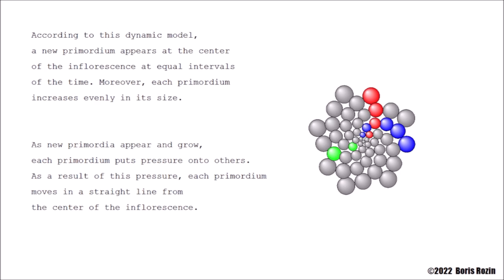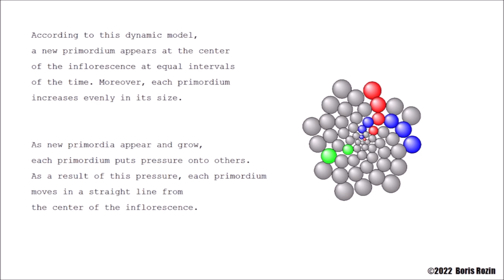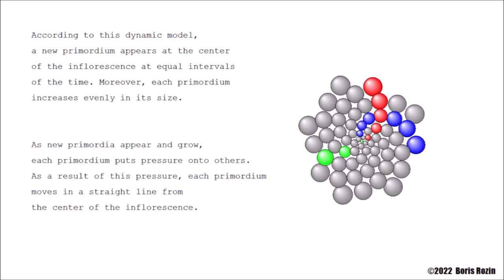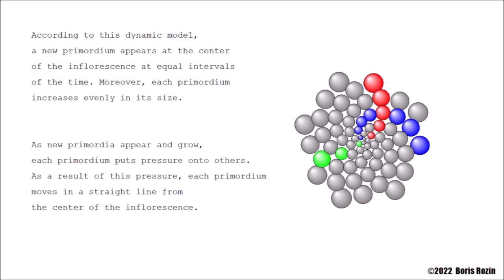As new primordia appear and grow, each primordium puts pressure onto others. As a result of this pressure, each primordium moves in a straight line from the center of the inflorescence.